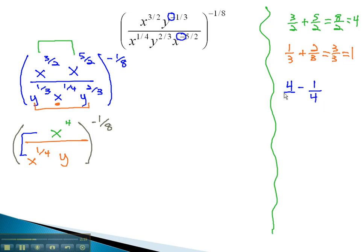To make the 4 into a fraction, we put it over 1, and to subtract, we need a common denominator of 4. Multiplying the first fraction by 4 over 4 gives us 16-fourths minus 1-fourth, which is 15-fourths.